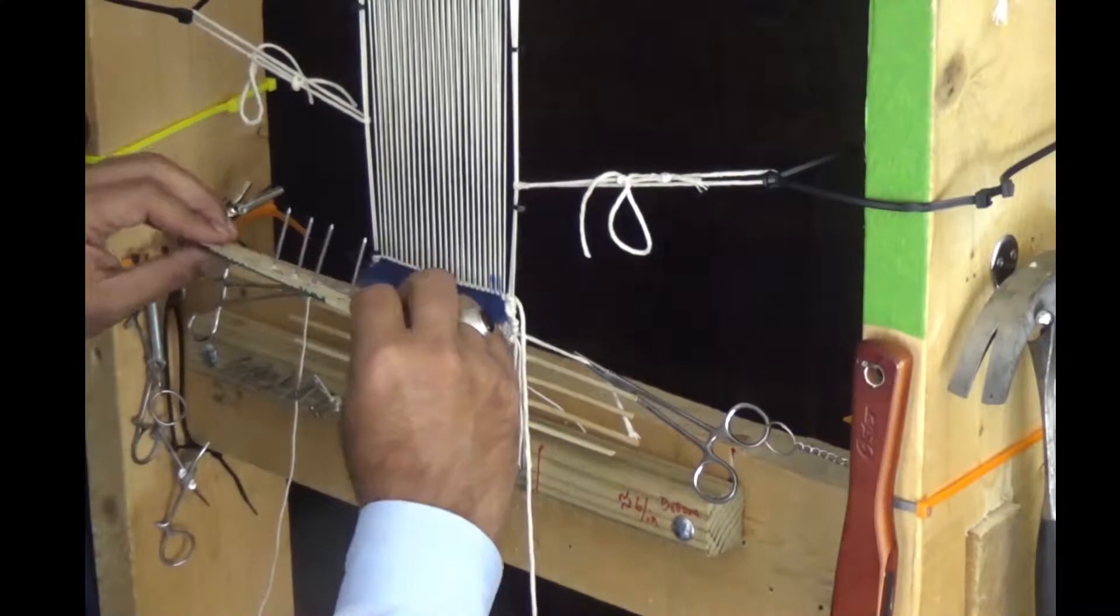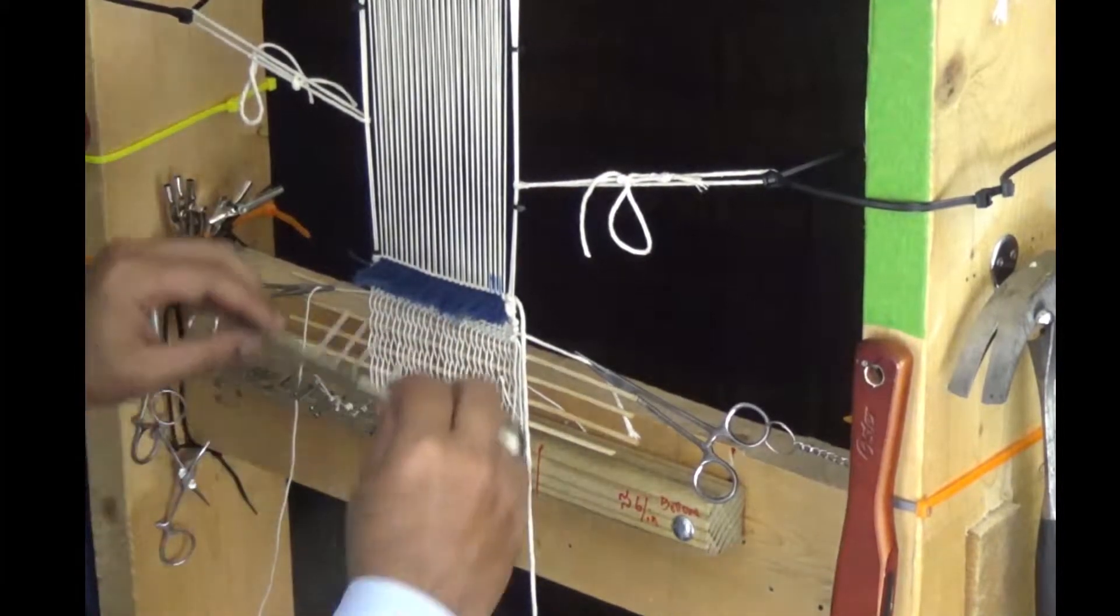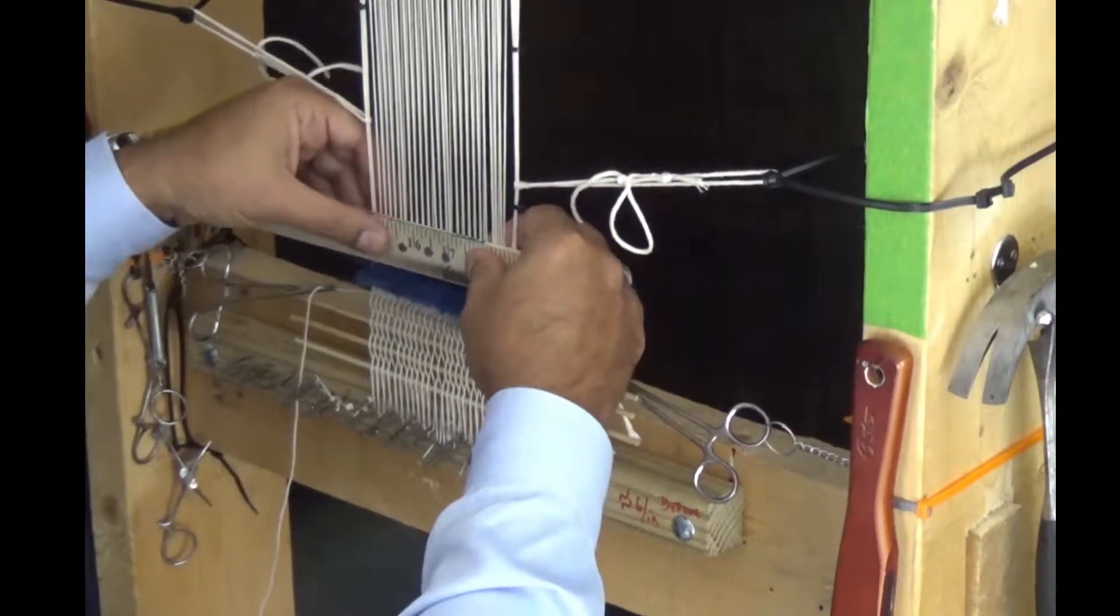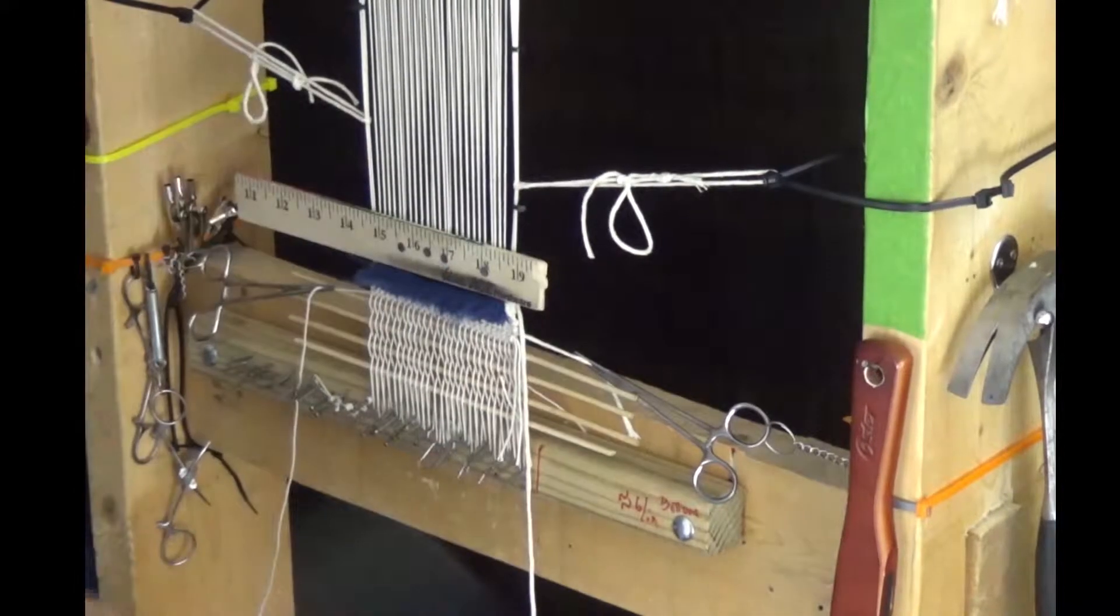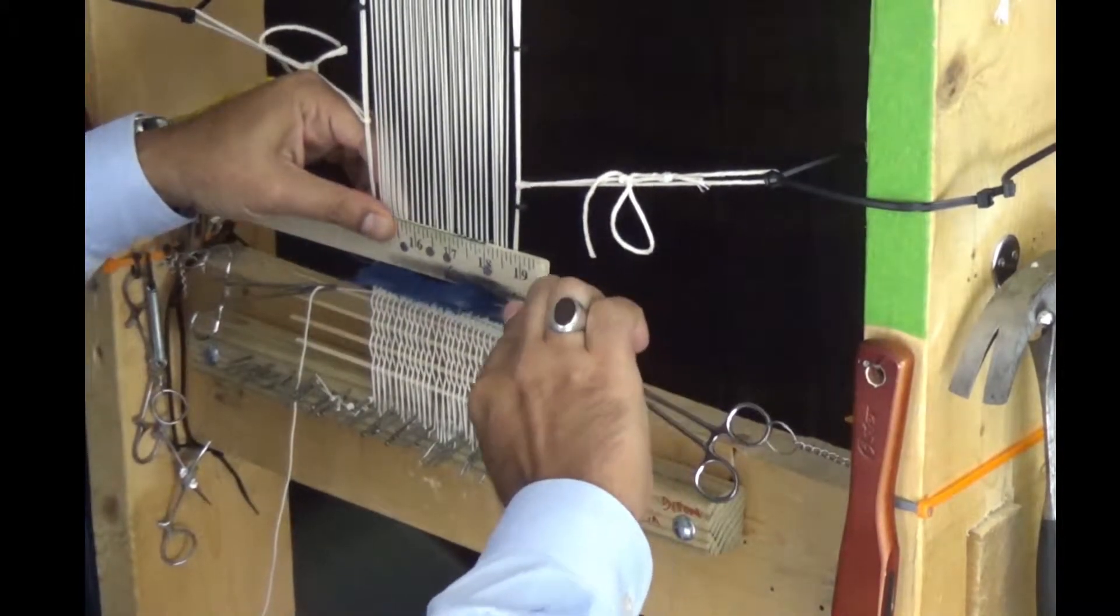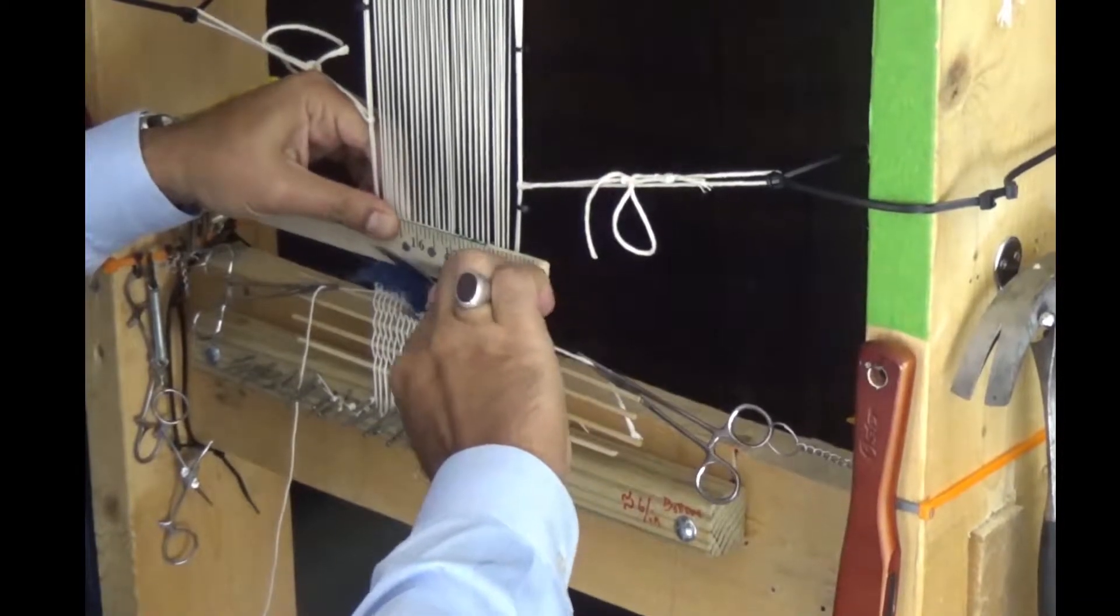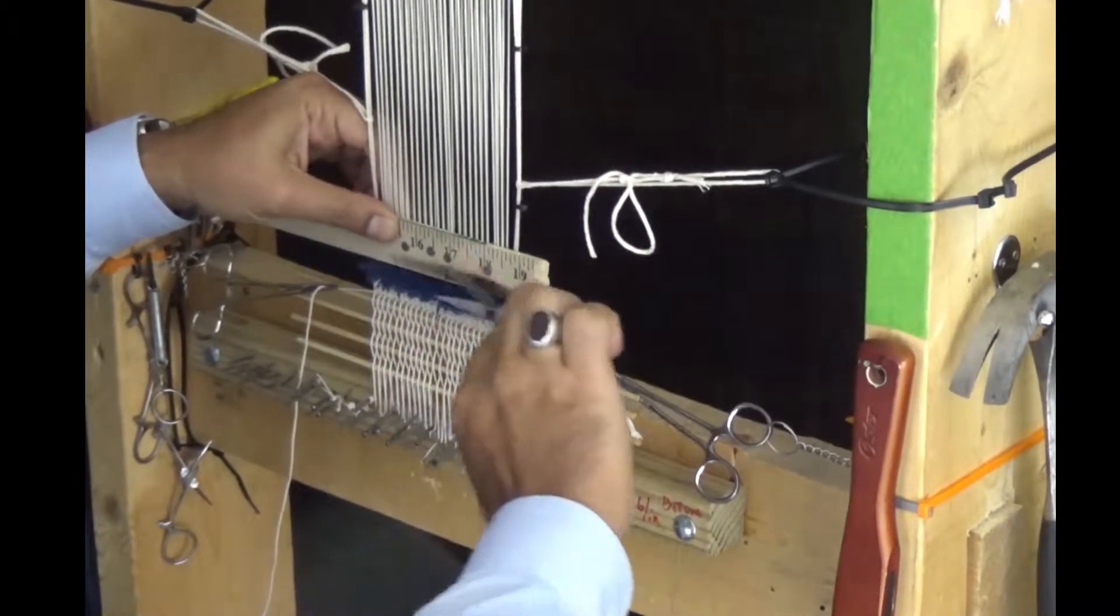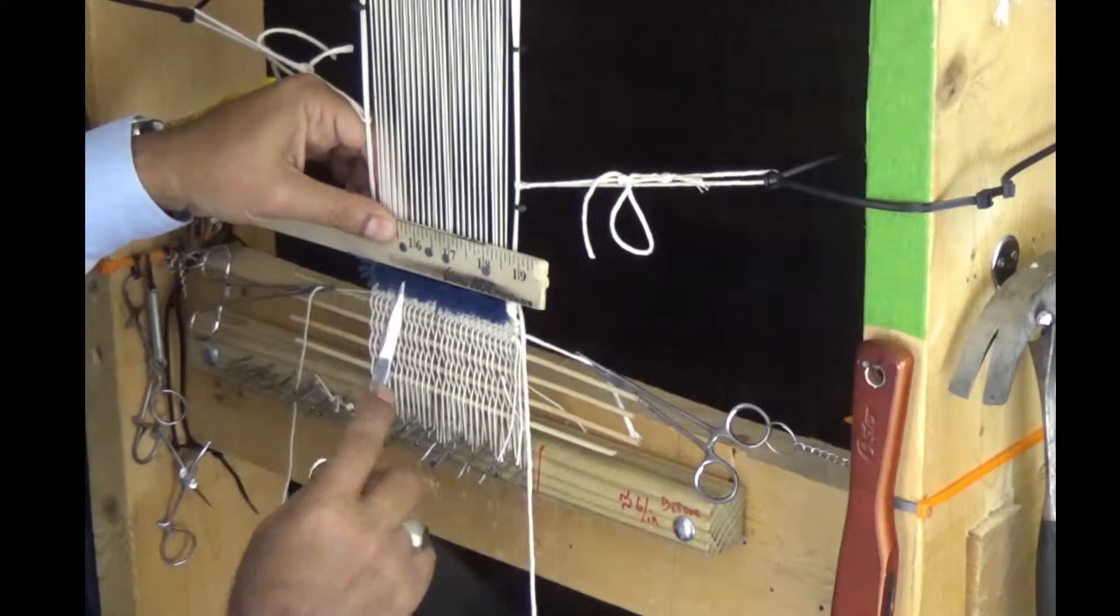A couple of things to mention. I'm using a simple jig to keep a constant length on the pile as I trim each row of knots. I'm also using a different pair of scissors, which is more comfortable for my hands. Again, please focus on what needs to happen rather than how it's being done.